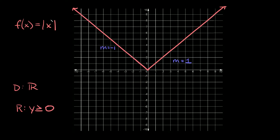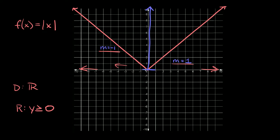Next we have f of x is equal to the absolute value of x, which when you graph it looks like a big V. This is the absolute value parent function — it looks like a big V, which is one way to remember it. The right half has a slope of positive one and the left half has a slope of negative one. The domain is all real numbers, and the range is y is greater than or equal to zero, because the very bottom of the graph is at the origin and both sides go up forever.